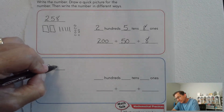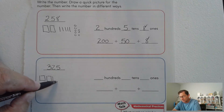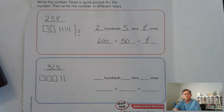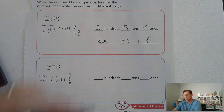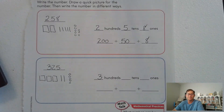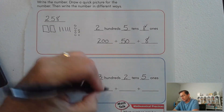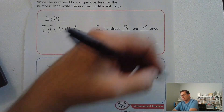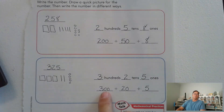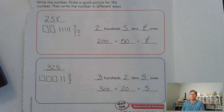Did you come up with this? The number was three hundred twenty-five. Hundreds would be three squares, two ten rods, and five ones. So write three in front of the hundreds, two in front of the tens, and five in the ones. Then write their values: three hundreds is three hundred, two tens is twenty, five ones is five. So three hundred twenty-five can be broken into three hundred plus twenty plus five.